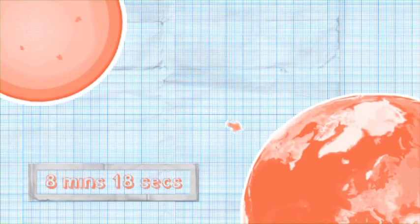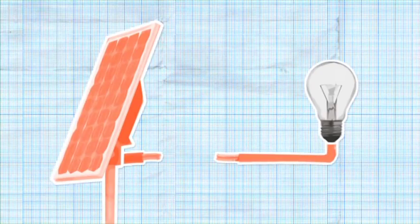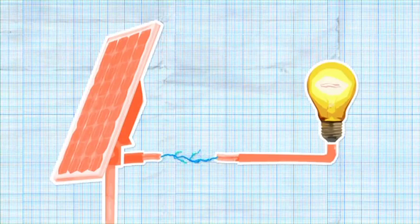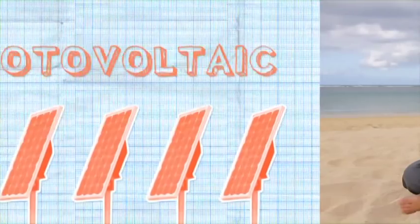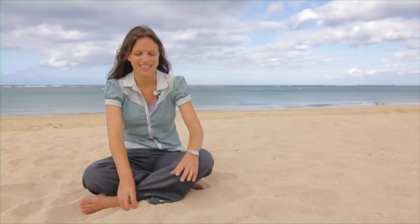Eight minutes and 18 seconds after leaving the Sun, sunlight arrives on Earth and we can use it for generating electricity. Solar cells are called photovoltaic cells. I'm here in Hawaii for the big photovoltaic conference of the year.